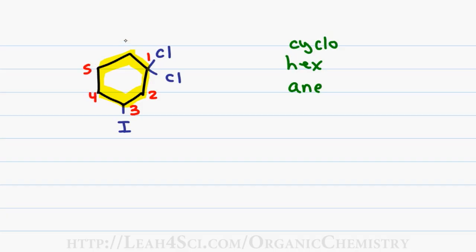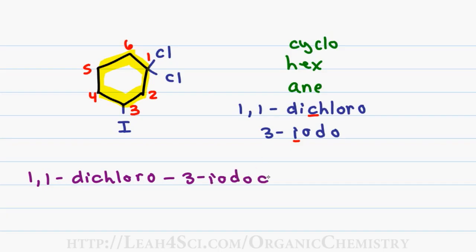Since I have multiple halogens, the number 1 cannot be assumed and so I have to put the number for each. 2 chlorines on carbon 1 gives me 1,1-dichloro. 1 iodine on carbon 3 gives me 3-iodo. When putting the name together, we alphabetize based on the halogen, not based on the word di. Since C comes before I, we have 1,1-dichloro-3-iodocyclohexane.